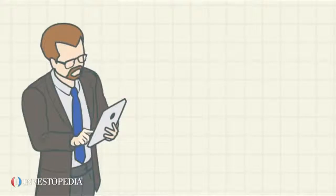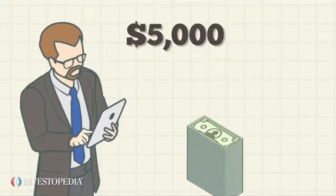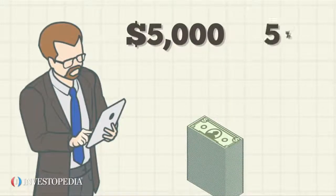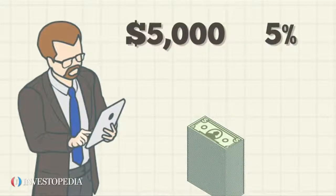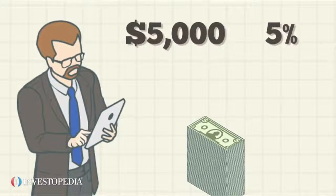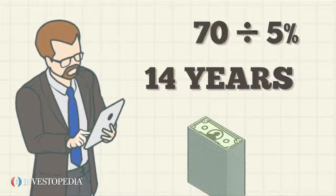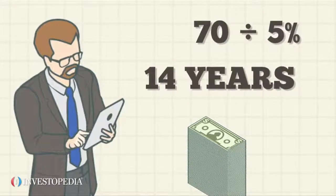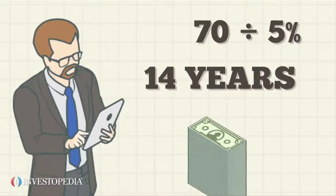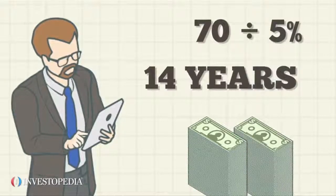For instance, Fred deposits $5,000 in a savings account earning 5% interest. Using the rule of 70, it will take 14 years — 70 divided by 5 — before Fred's $5,000 doubles to $10,000.